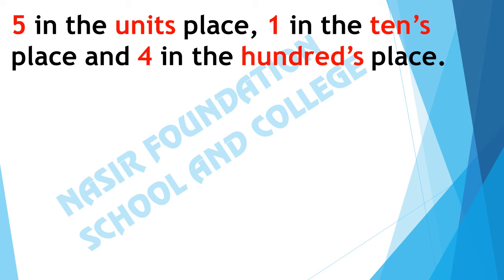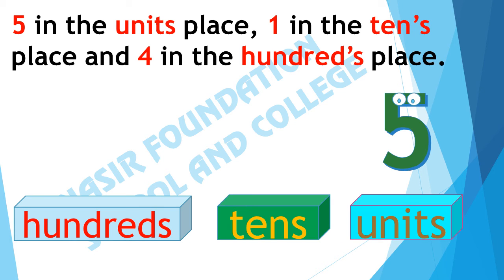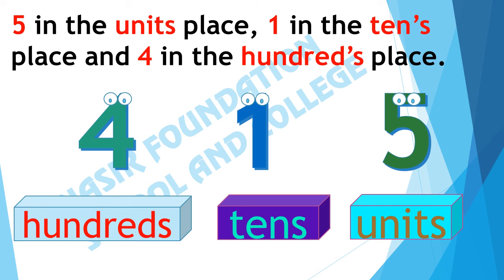Five is in the units place, 1 is in the tens place, and 4 is in the hundreds place. What will be the number? First we will draw the chart. We write 5 in the units place, 1 in the tens place, and 4 in the hundreds place. There are 4 hundreds. It makes 4 hundred and fifteen.